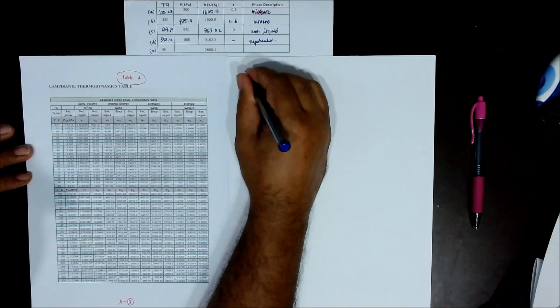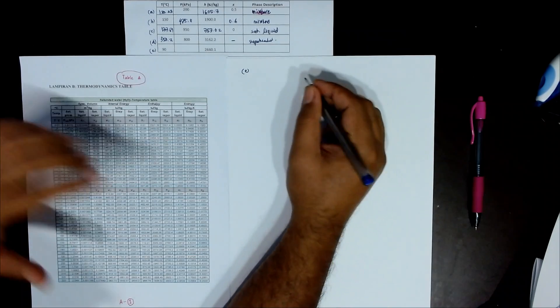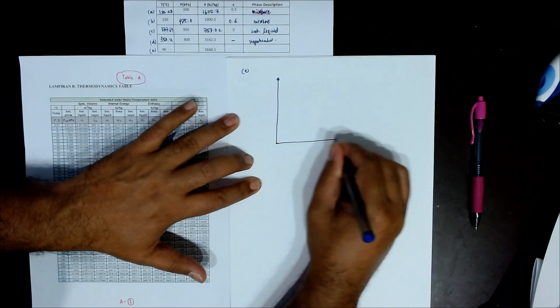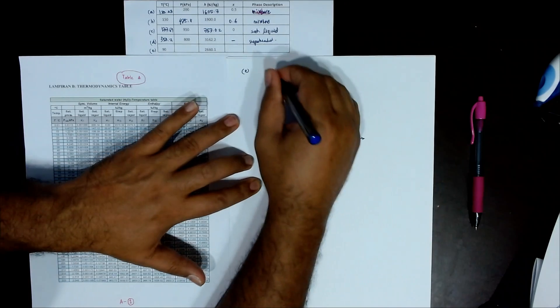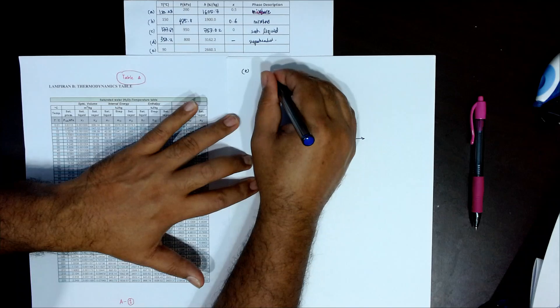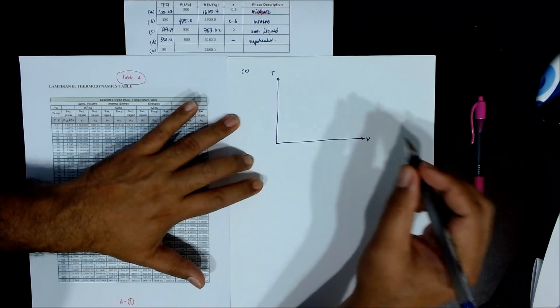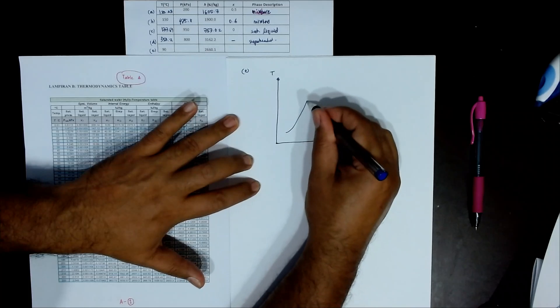Okay, now let's solve part E, the last one. Always draw the T-V diagram because in the exam you have to show the T-V diagram, otherwise probably you can get it from copying from your friend through WhatsApp. So if you draw the T-V diagram, then you can get the full mark.